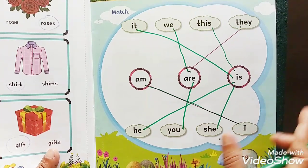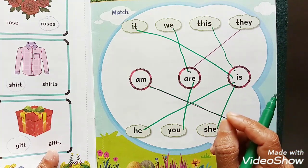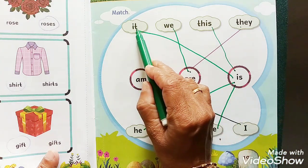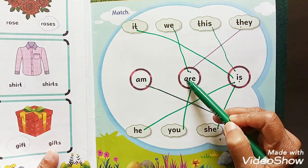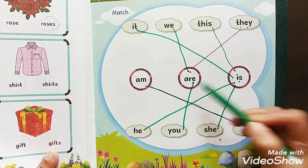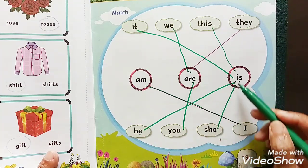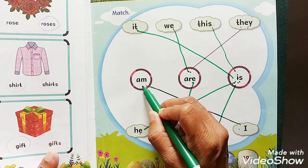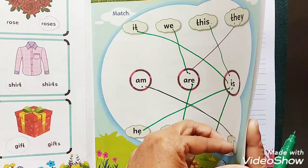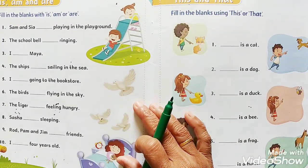As you do the matching, make one simple sentence each where is, am and are are used. It is a dog. We are children. This is my book. They are friends. He is a boy. You are a girl. She is a dancer. I am a girl — or I am a boy. These are the simple sentences you can learn to speak in English.